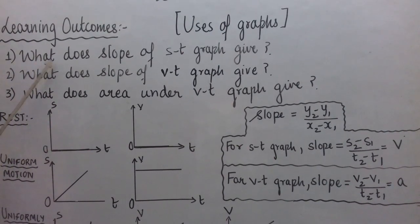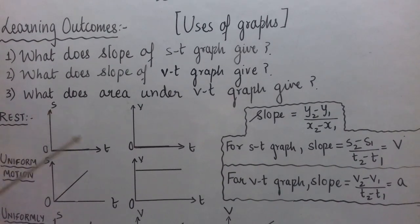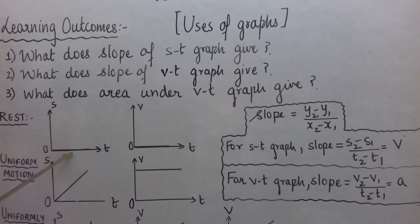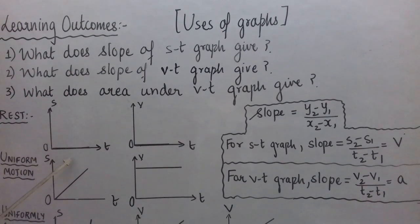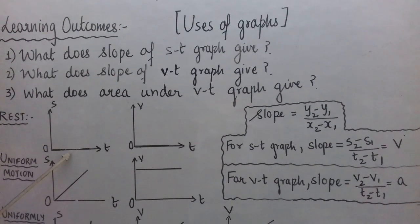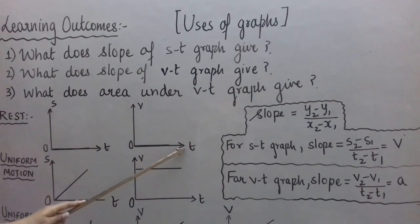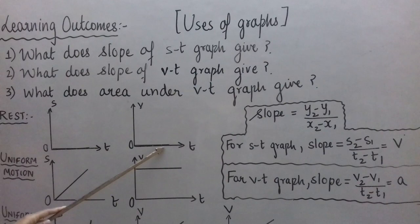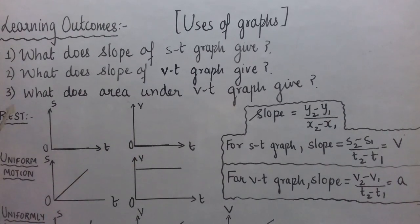Before we try to achieve these outcomes, let us see the general uses of graphs. Looking at this ST graph, as time passes the distance remains 0, meaning the position of a body is not changing with respect to its surroundings. So we can say this is a case for a body at rest. Similarly, when we consider the VT graph and velocity remains 0 as time passes, that is also the case for a body at rest.